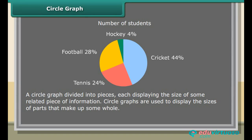Circle Graph: A circle graph is divided into pieces, each displaying the size of some related piece of information. Circle graphs are used to display the sizes of parts that make up some whole. Circle graphs are also known as pie graphs.